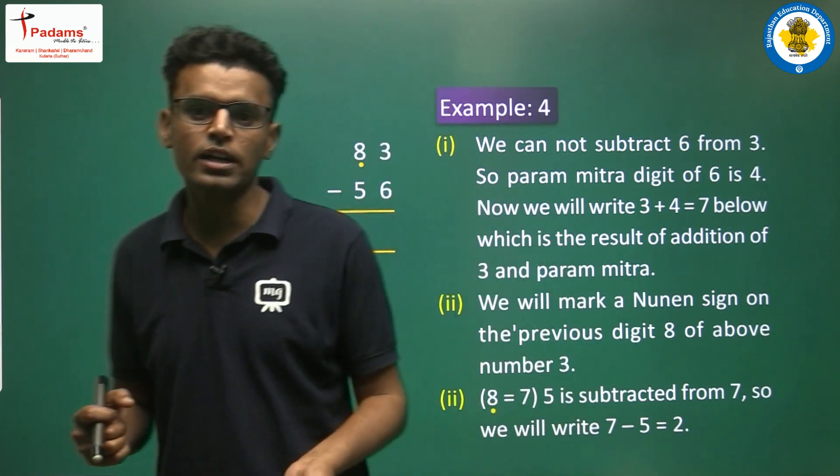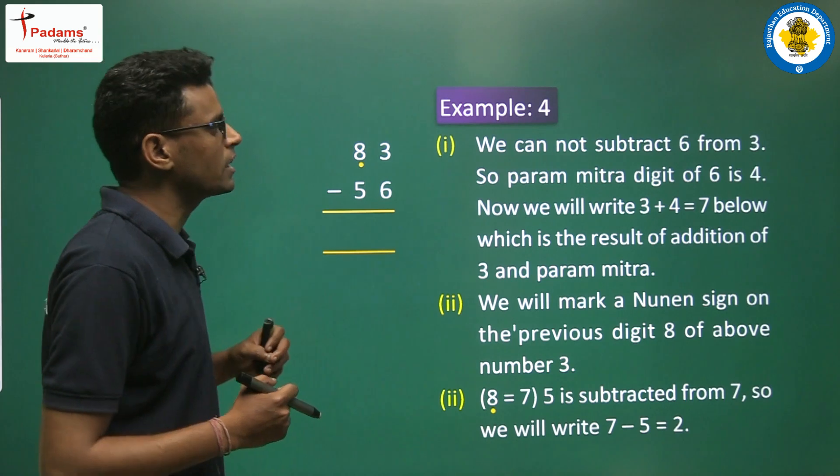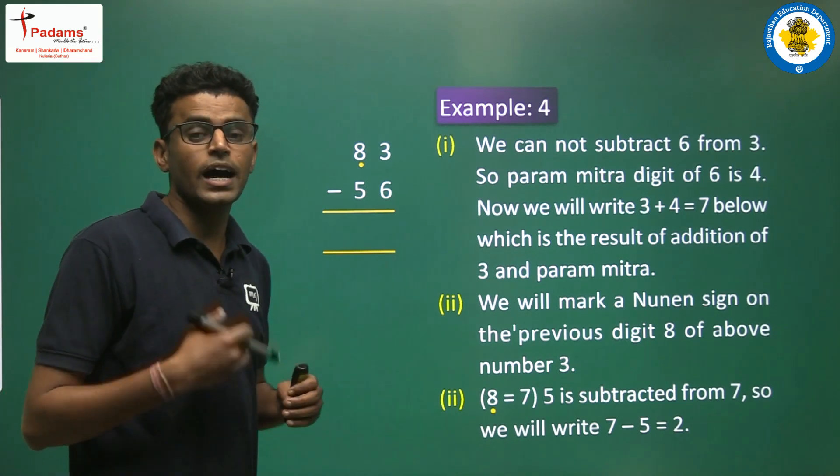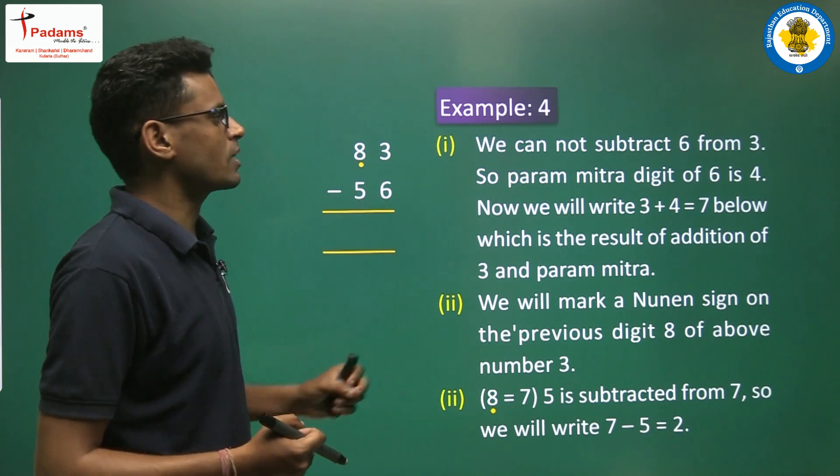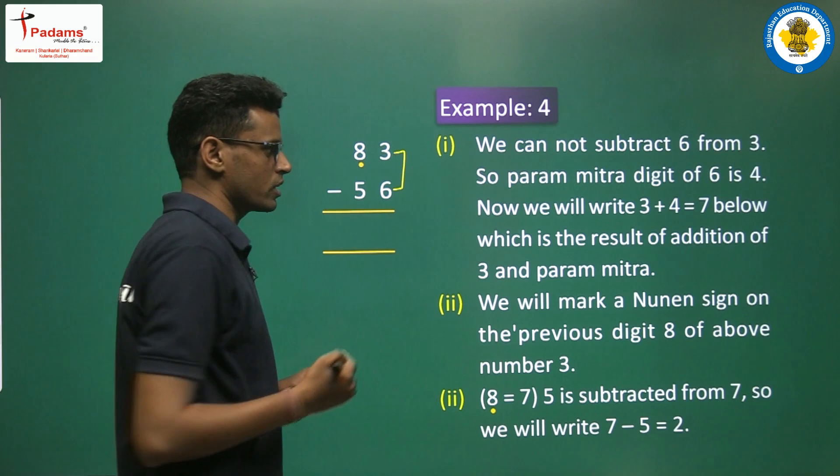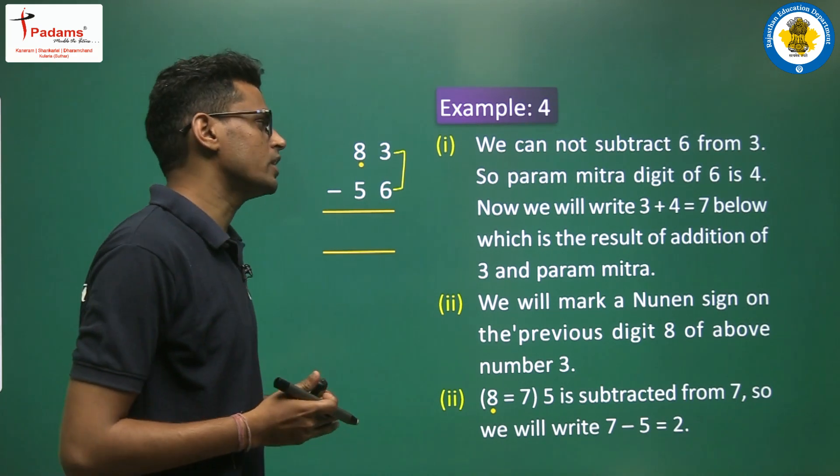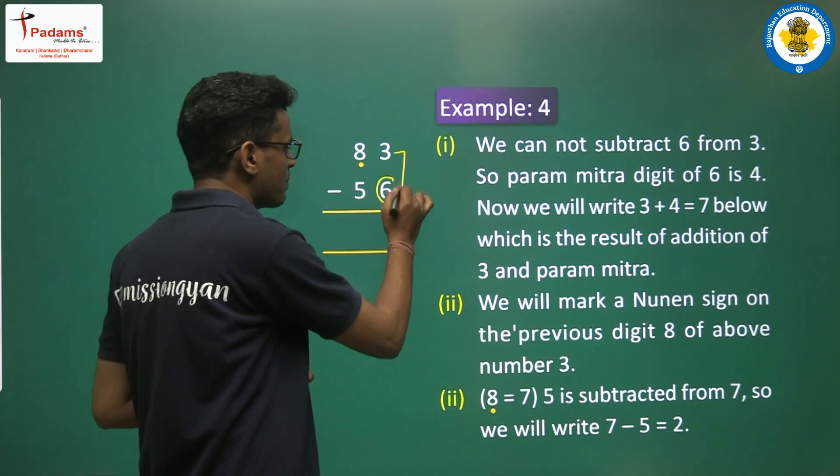But in Vedic Ganit, there is another concept. We cannot subtract 6 from 3, so this procedure won't work. What we need to do is find the paramitra digit of 6.